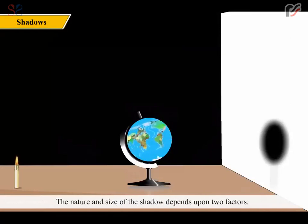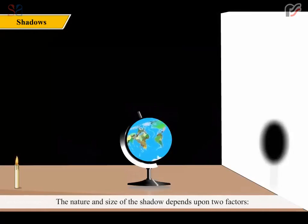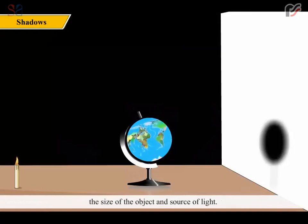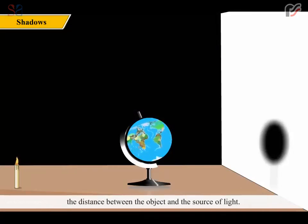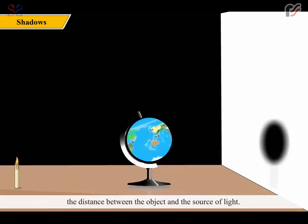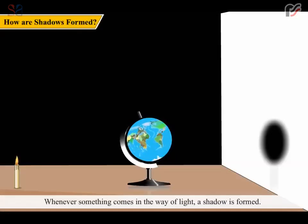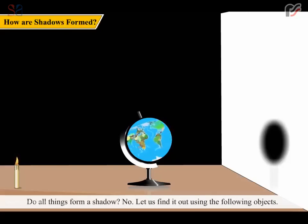The nature and size of the shadow depends upon two factors: the size of the object and source of light, and the distance between the object and the source of light. Whenever something comes in the way of light, a shadow is formed.